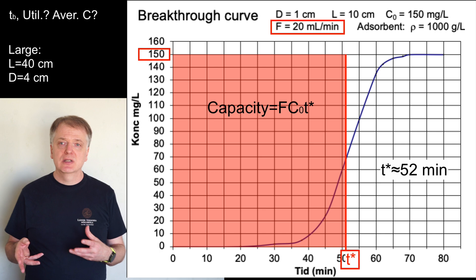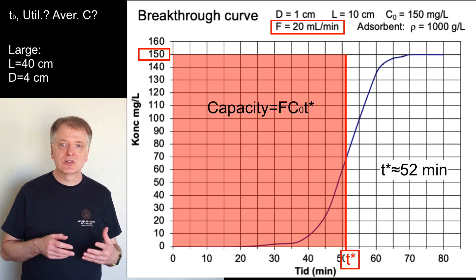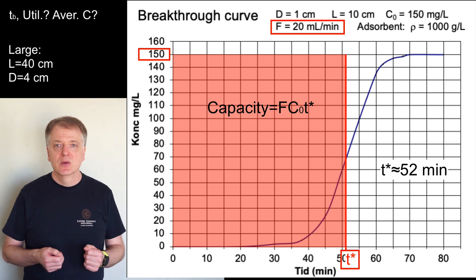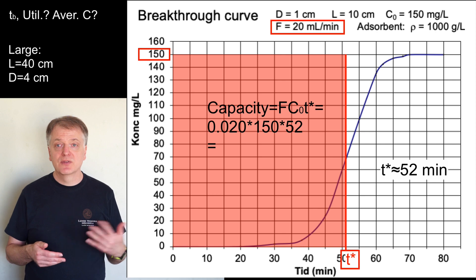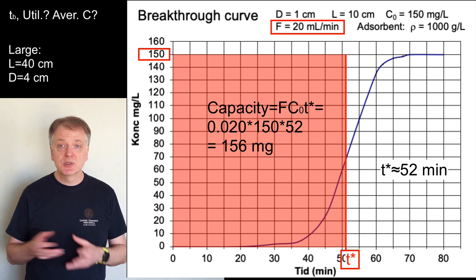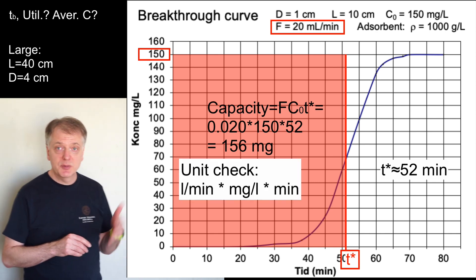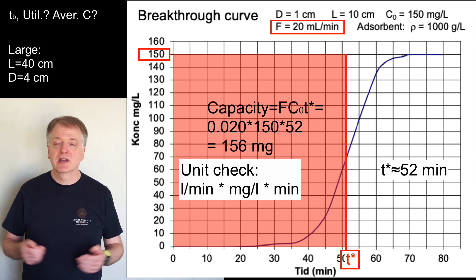We calculate the capacity of the column by multiplying the feed flow rate F with the inlet concentration and T star. We get 20 times 10 to the power minus 3 liters per minute times 52 times 150 which gives us 156 milligrams. To be sure let's check the units. Liter per minute times milligram per liter times minutes gives us milligram.